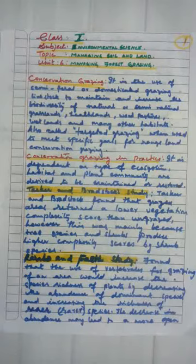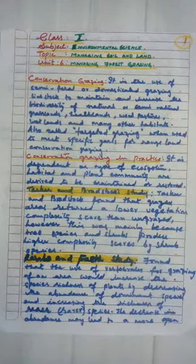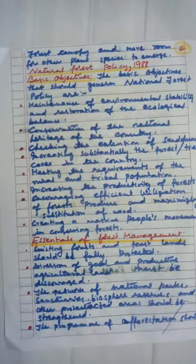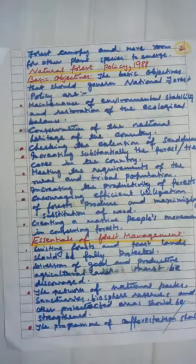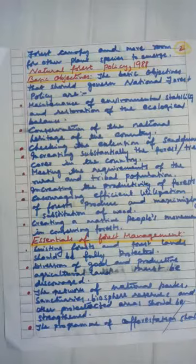Now moving to the National Forest Policy 1988. The basic objectives of the National Forest Policy 1988 are as follows: maintenance of environmental stability through preservation and, where necessary, restoration of the ecological balance that has been adversely disturbed by serious depletion of the natural forests of the country. Maintenance of ecological balance and environmental stability by conserving forests.